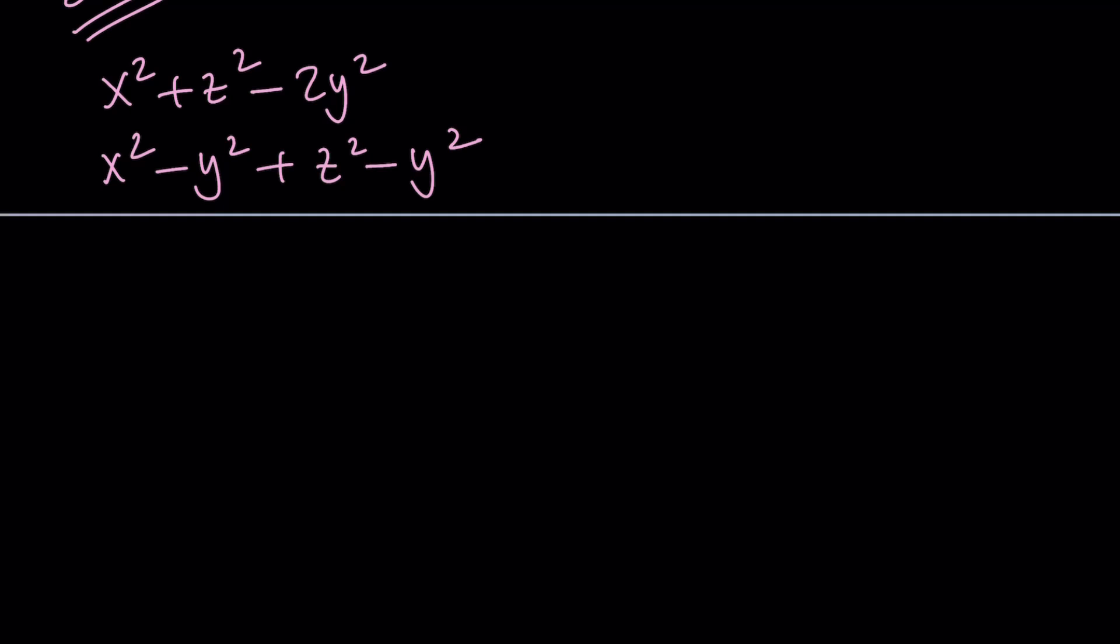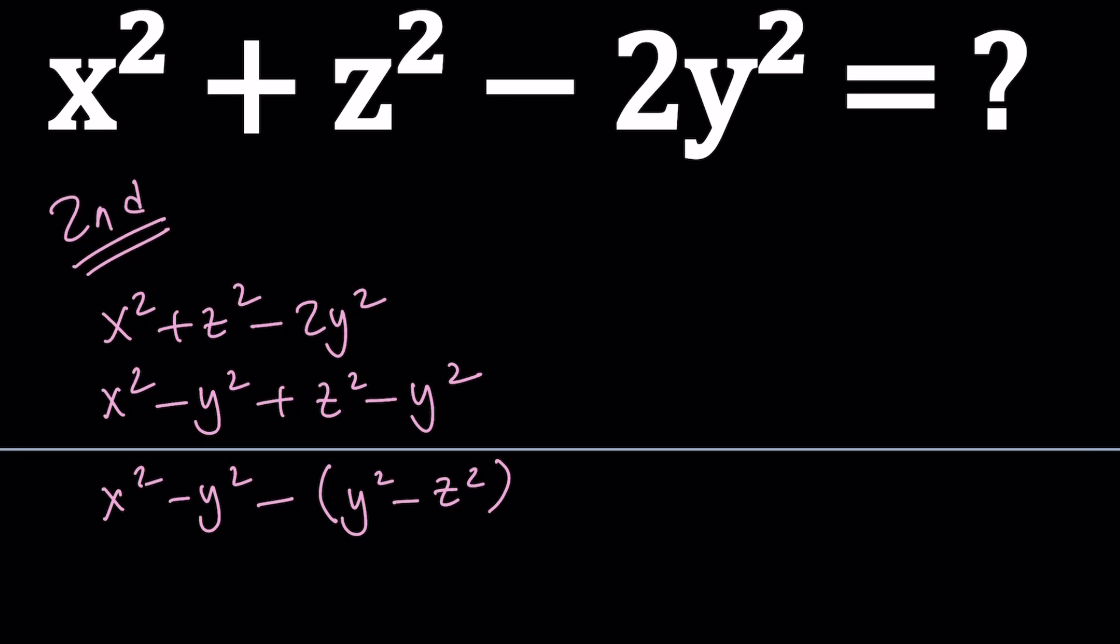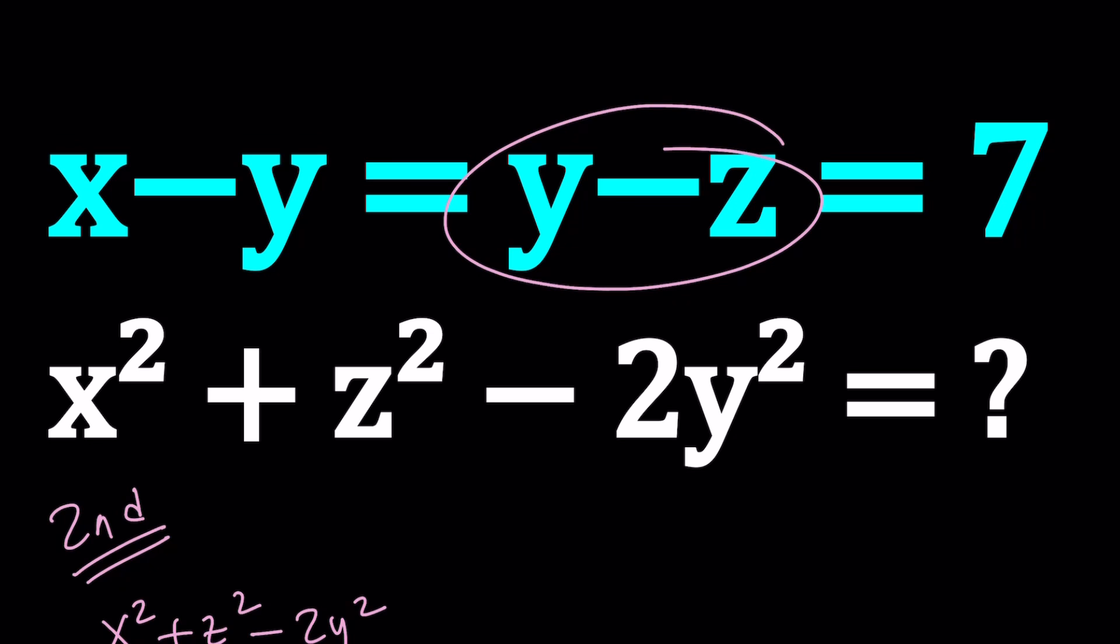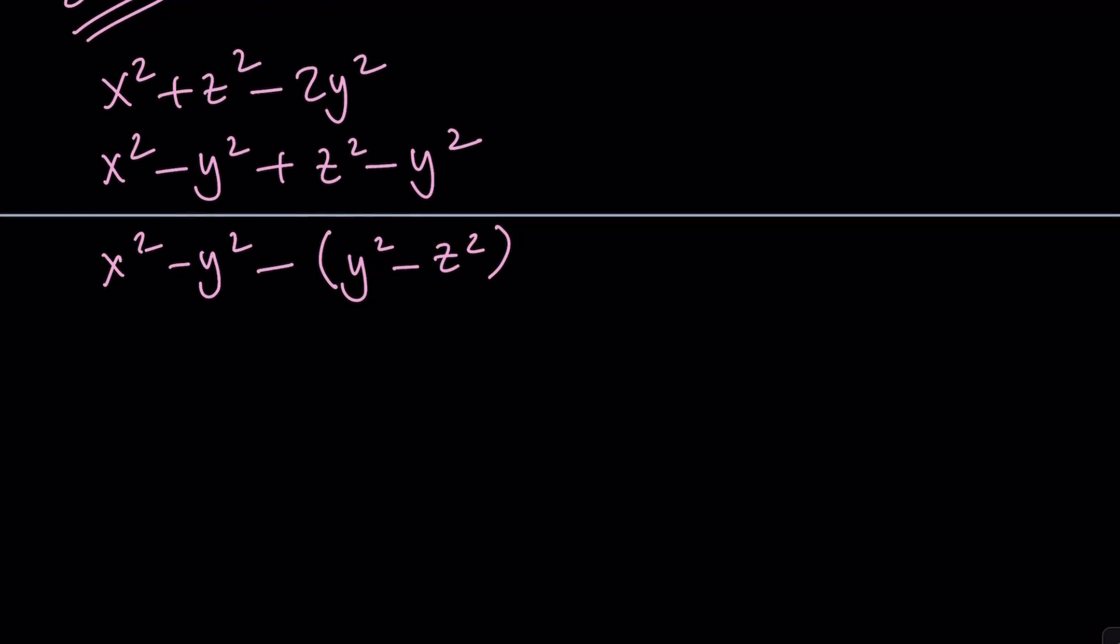Now let's go ahead and negate the second expression. The reason behind that is I don't want to have z squared minus y squared, but I want to have y squared minus z squared for this reason.